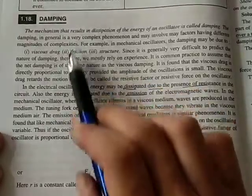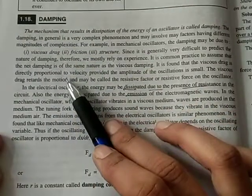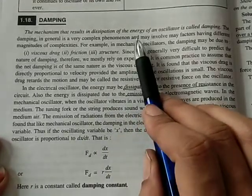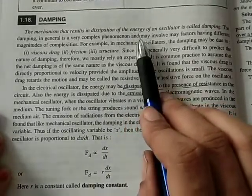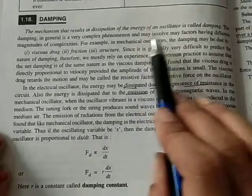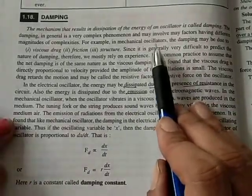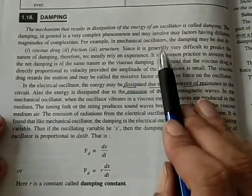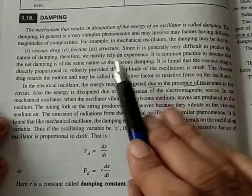Damping is a mechanism which results in dissipation of energy. The energy is decreased continuously and dissipated, and the oscillations ultimately come to an end. Damping is actually a very complex phenomenon and it may involve many factors.